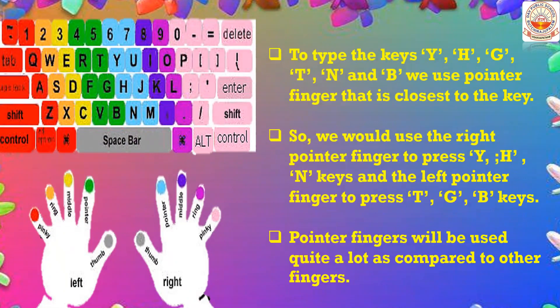You know how to type the home keys ASDF and semicolon LKJ and which fingers to use. Now, to type the keys Y, H, G, T, N, and B, we use the pointer finger that is closest to each key. Use the left pointer finger to type T, G, and B, and use the right pointer finger to type Y, H, and N. The pointer fingers will be used quite a lot compared to other fingers.